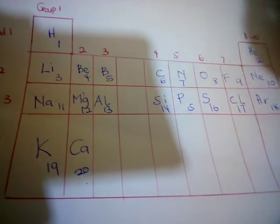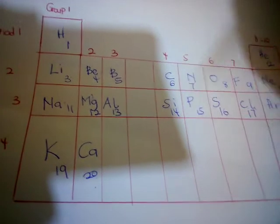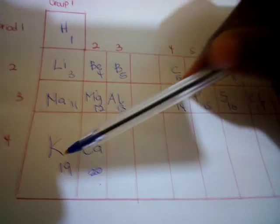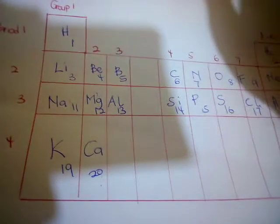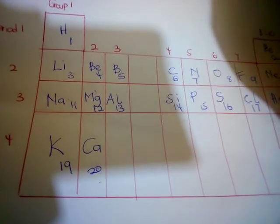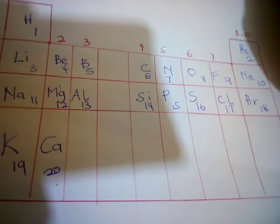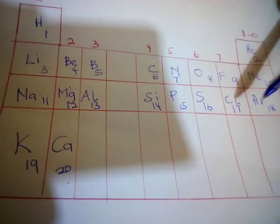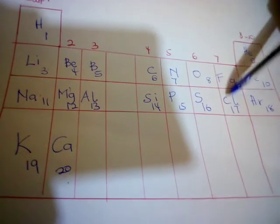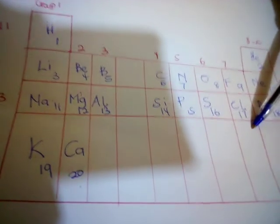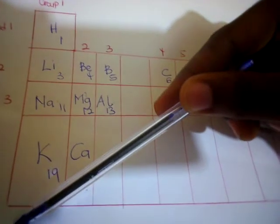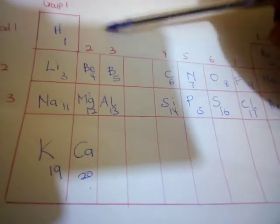The most reactive metals are the group 1 elements: hydrogen, lithium, sodium, and potassium. And the most reactive non-metals are the halogens. Remember, I said the halogens are the group 7 elements — fluorine and chlorine. Alkali metals are the group 1 elements, and alkaline earth metals are the group 2 elements.